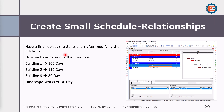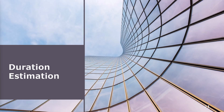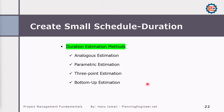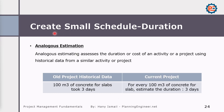Now we need to modify the durations to give every building a logical duration. But before doing that, let's talk about duration estimation. We have several methods according to project management science. The first is analogous estimation, which assesses the duration of an activity or project using historical data from similar activities. For example, historical data says 100 cubic meters of concrete for slabs took three days — so in our new project, for every 100 cubic meters we put three days.